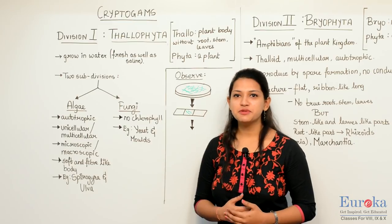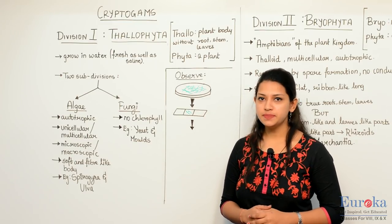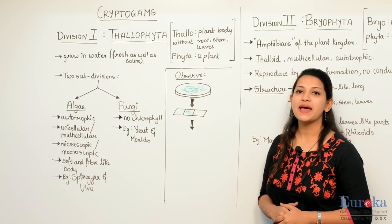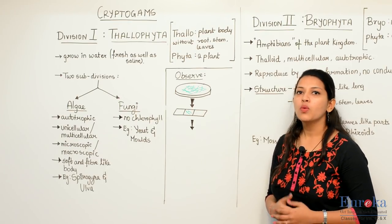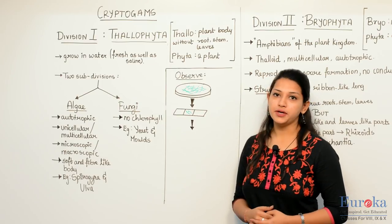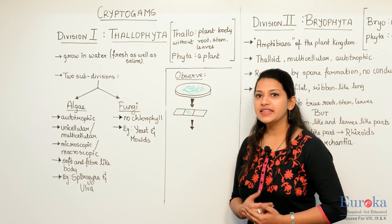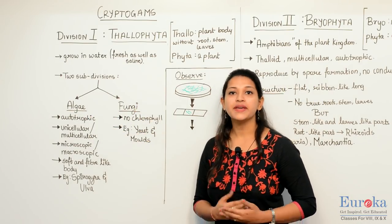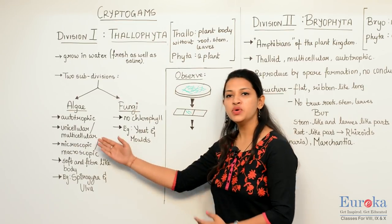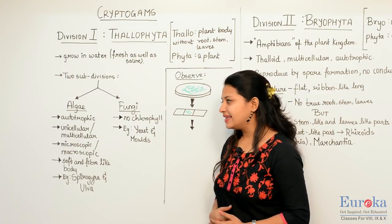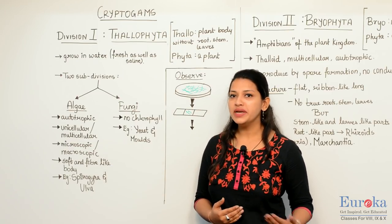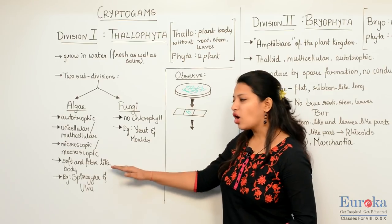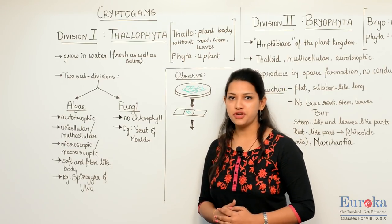The first division under Cryptogams is Thallophyta. 'Thallo' means the plant body without root, stem and leaves; 'phyta' means a plant. They grow in water — both fresh as well as saline water. They are divided into two subdivisions: Algae and Fungi. Algae are autotrophs because they contain chlorophyll. They can be unicellular as well as multicellular. Algae can be microscopic — observed only under a microscope — or macroscopic, observable with the naked eye. They have a soft and fiber-like body, and thus fall under the division Thallophyta.